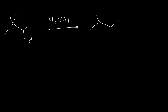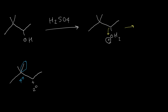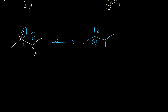Here is the next example. Again we have protonation of the alcohol, then water leaves the structure and forms a carbocation. This carbocation is secondary and the adjacent carbon is quaternary, so it can easily go through rearrangement by alkyl shift to form a tertiary carbocation. Again we have two carbocations and both of them can produce alkene.